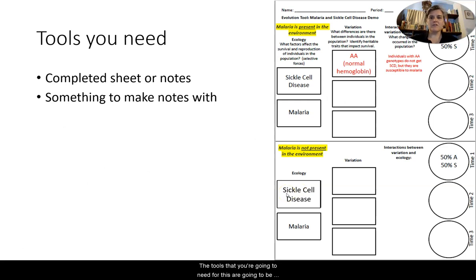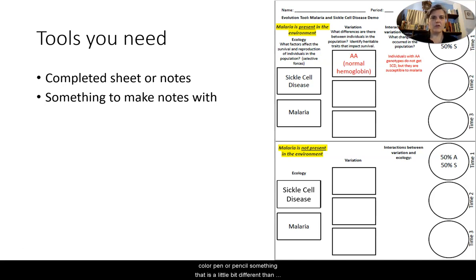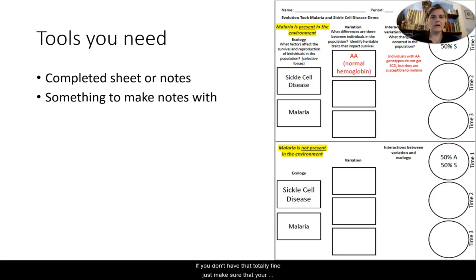The tools you're going to need are the completed Evolution Tool sheet or notes that you've made, and then something to make notes with. A different colored pen or pencil — something a little different than what you originally wrote with — is most helpful. If you don't have that, totally fine. Just make sure your notes are loud and clear on that paper so you can see the difference between what you had originally put down.